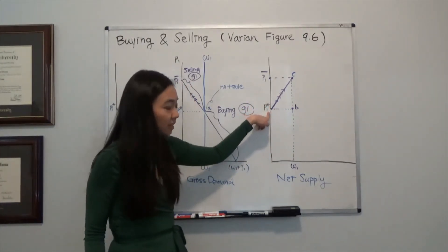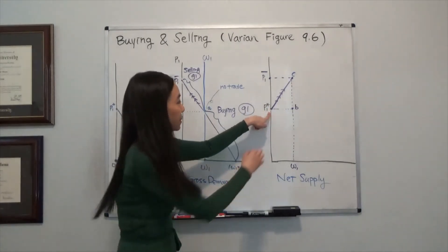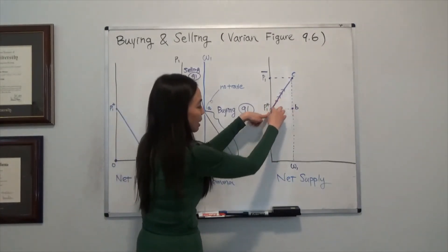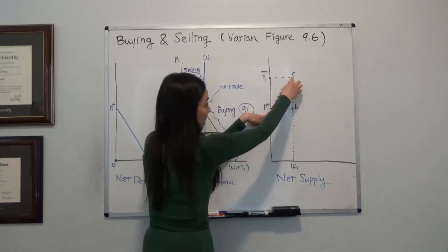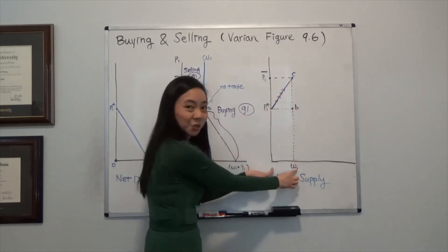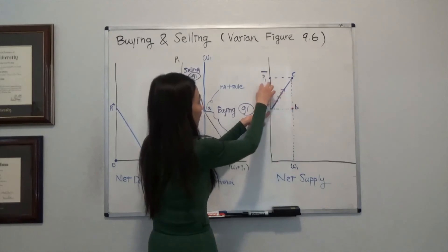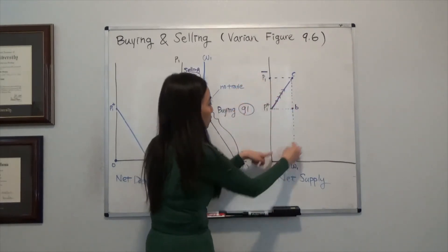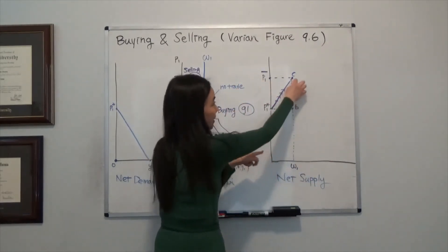I cannot sell more than my initial endowment. Therefore, suppose the price is P1 bar, then I'm going to sell my entire endowment, omega 1. So you can see that when I'm selling more Good 1, I'm also cutting my consumption of Good 1.